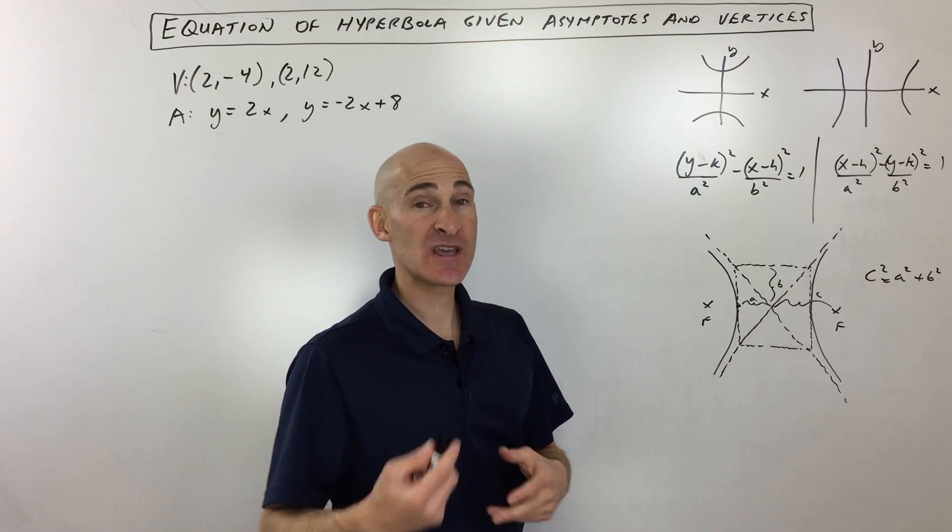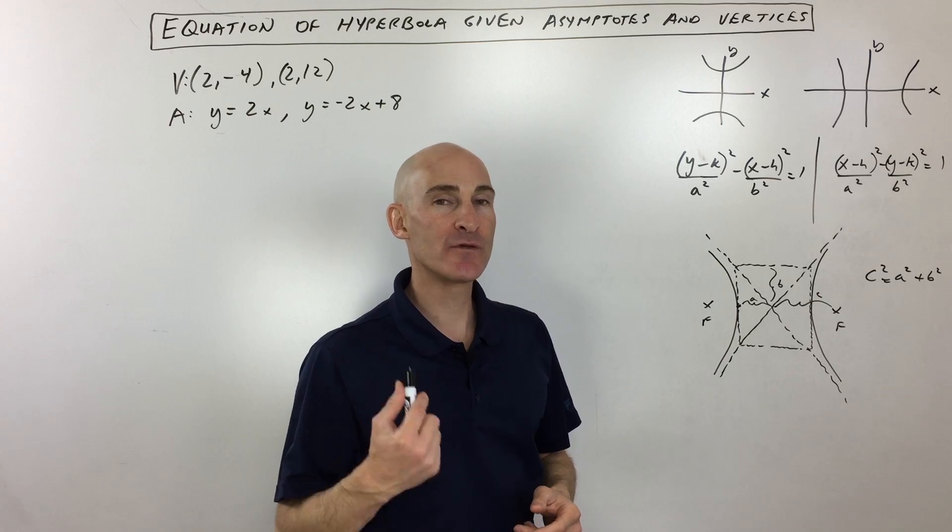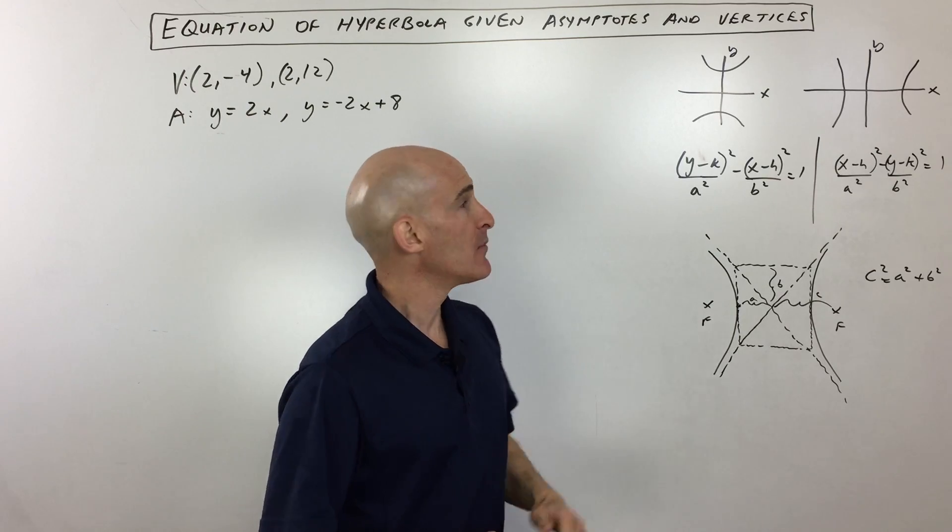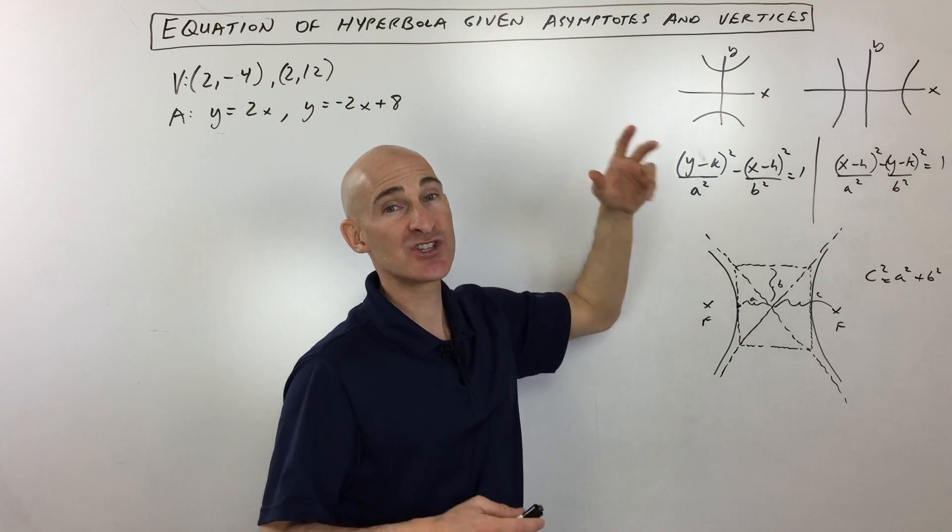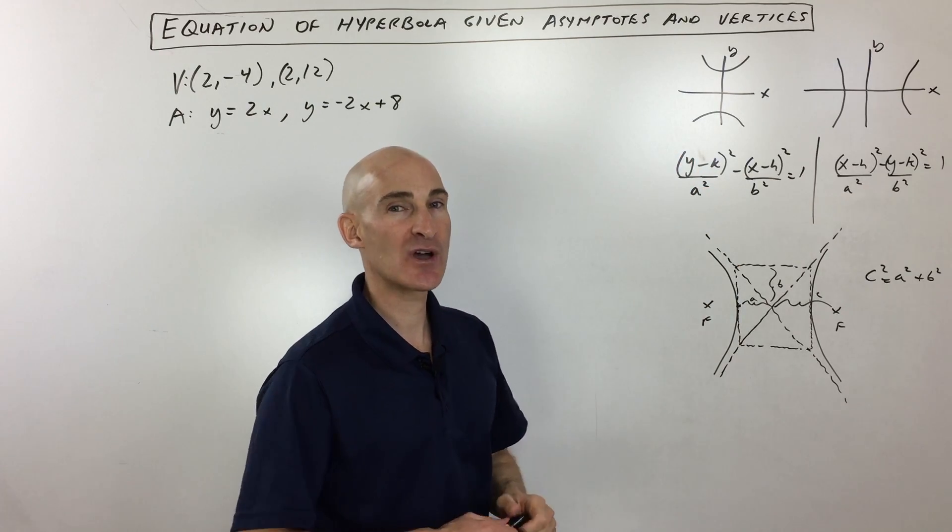If any of this seems confusing as I'm going through it, I'll have a link to another video I did talking about hyperbolas that goes into more depth. But this is a particularly challenging problem when they just give you the asymptotes and vertices, so I want to show you how to work with this one.